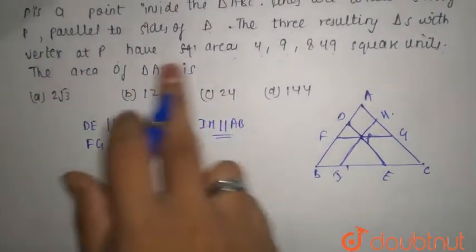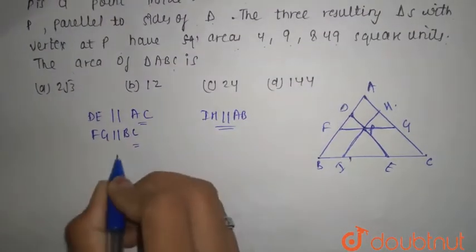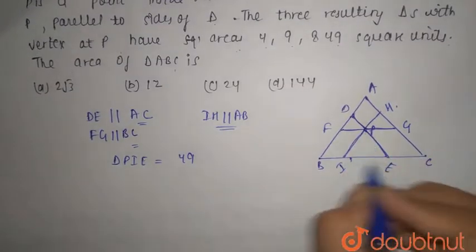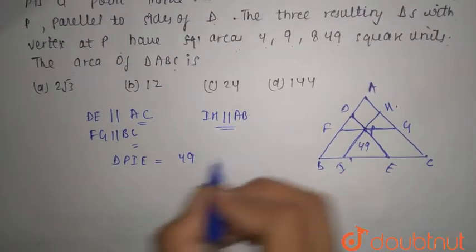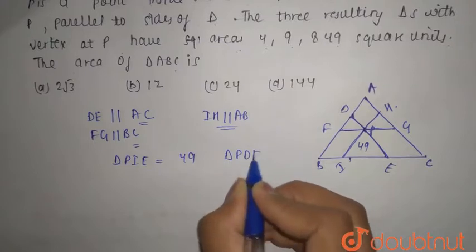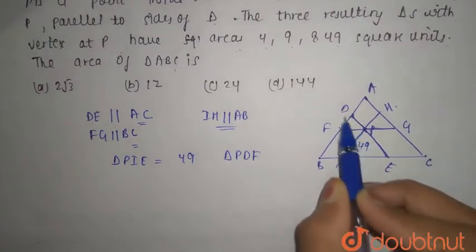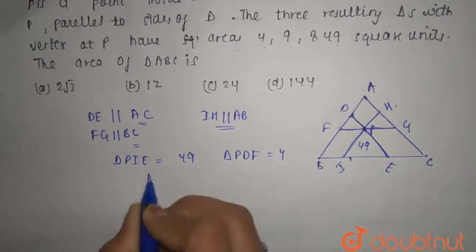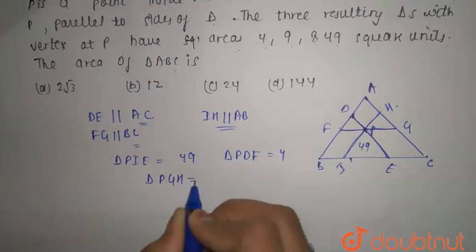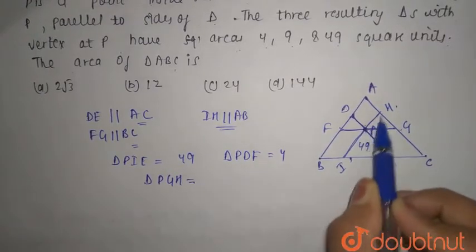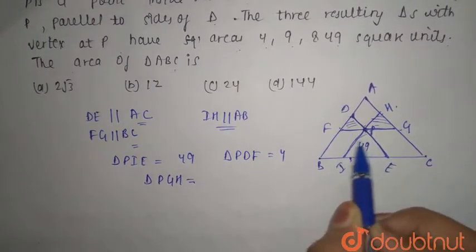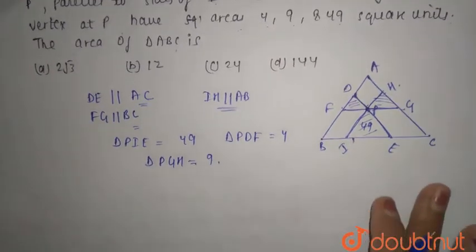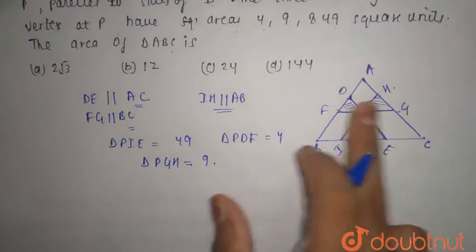The three triangles with vertex at P are: triangle PIE with area 49 square units, triangle PDF with area 4 square units, and triangle PGH with area 9 square units.